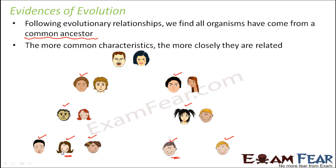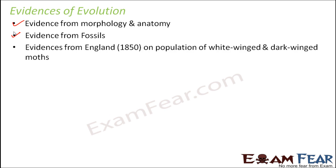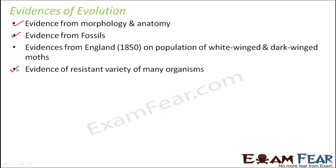Now we will see what the various evidences are which prove the existence of evolution. Some common evidences came from morphology and anatomy. Evidences also came from fossils buried under rocks, and from England around 1850 where the population of white-winged and dark-winged moths changed. There was also evidence of resistant varieties of organisms — organisms which were initially killed by certain antibiotics, but later a resistant variety of the same organism evolved.